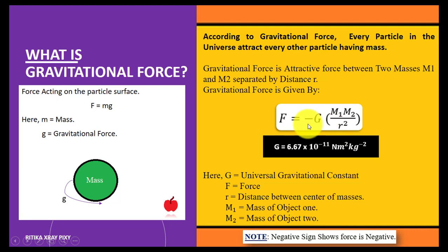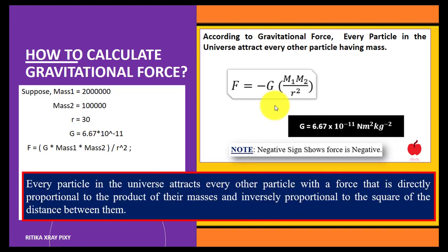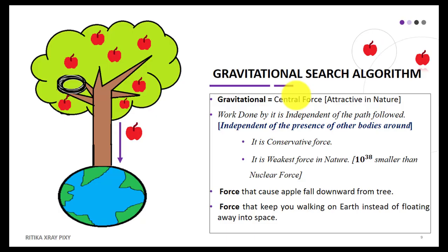For two particles with masses m1 and m2 at a given distance, using the given gravitational constant value and this equation, we can compute the gravitational force. Every particle in the universe attracts every other particle with a force that is directly proportional to the product of their masses and inversely proportional to the square of the distance between them.